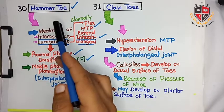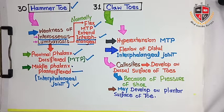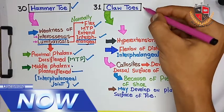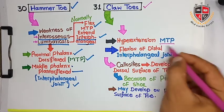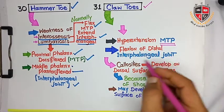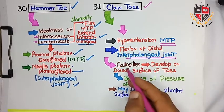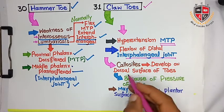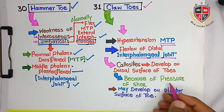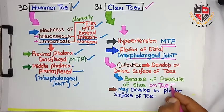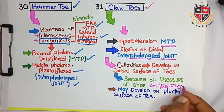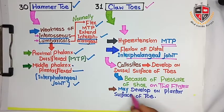This is the condition of hammer toe. The next clinical is claw toe. During this condition, hyperextension occurs at the metatarsophalangeal joint and flexion of the distal interphalangeal joint occurs. Callosities form on the dorsal surface of the toes because of pressure of the shoe on the dorsal surface, and callosities may also develop on the plantar surface of the toe because of pressure of the shoe.